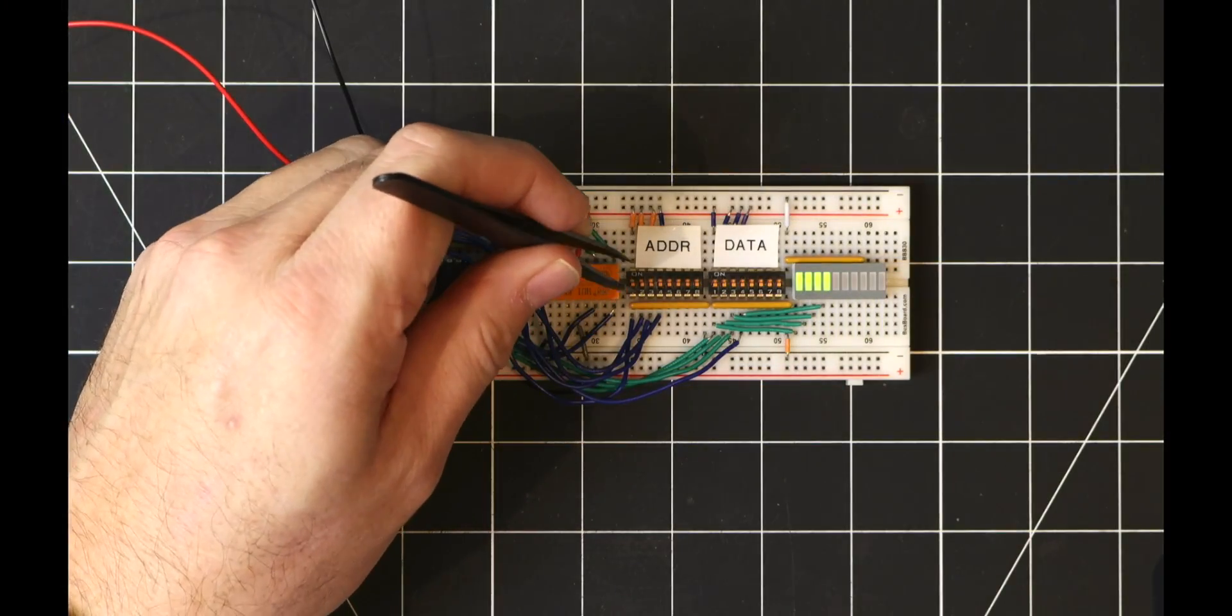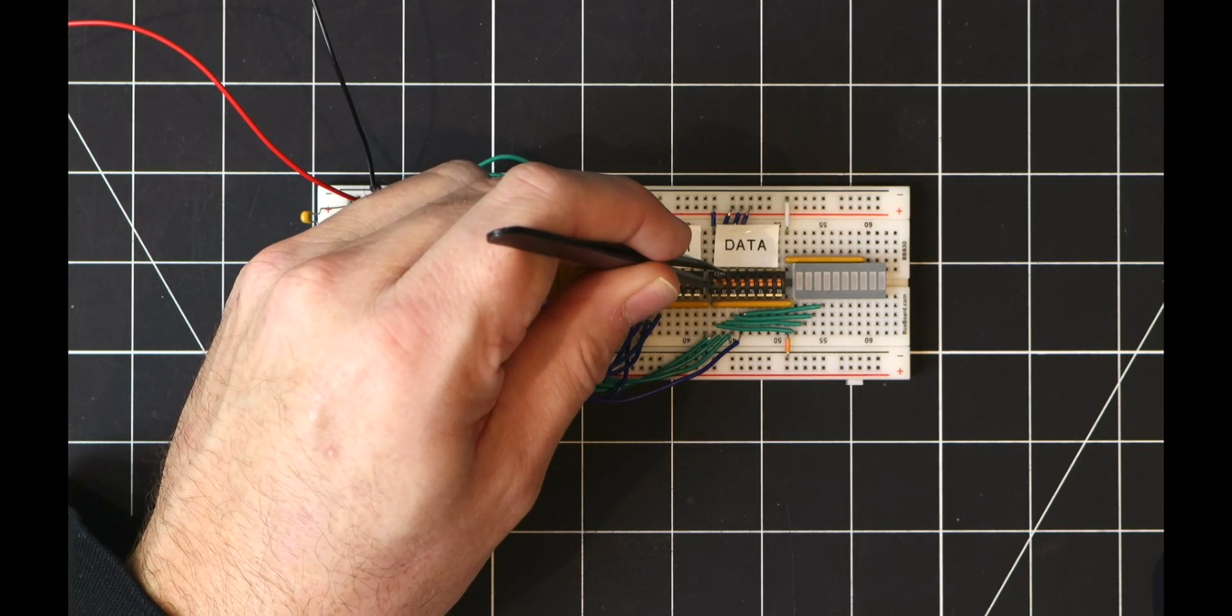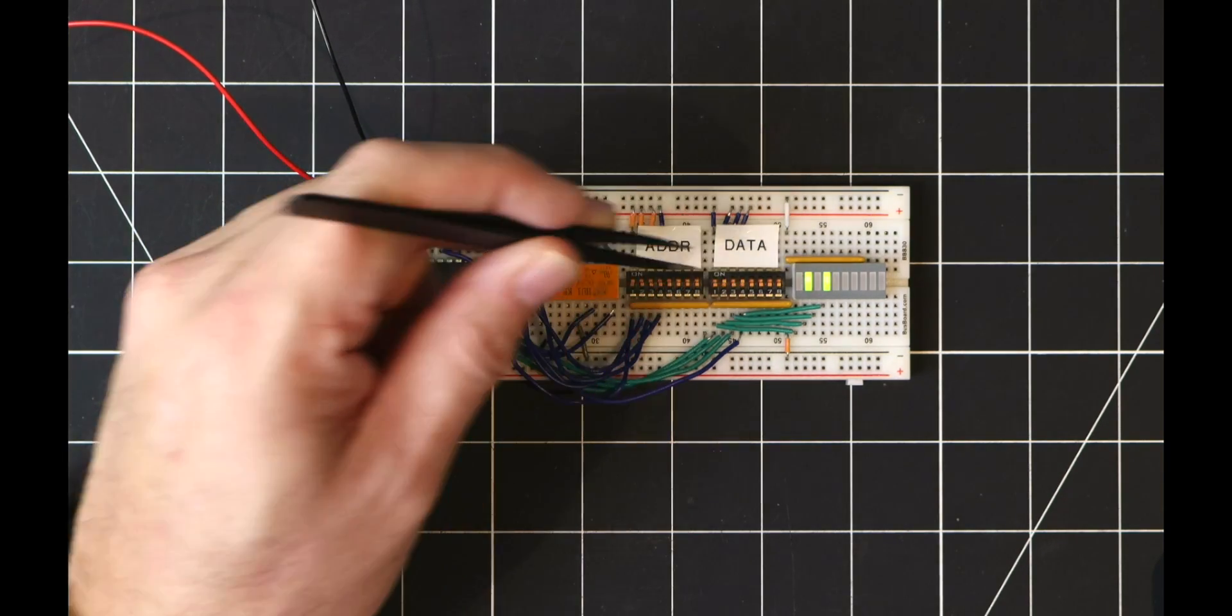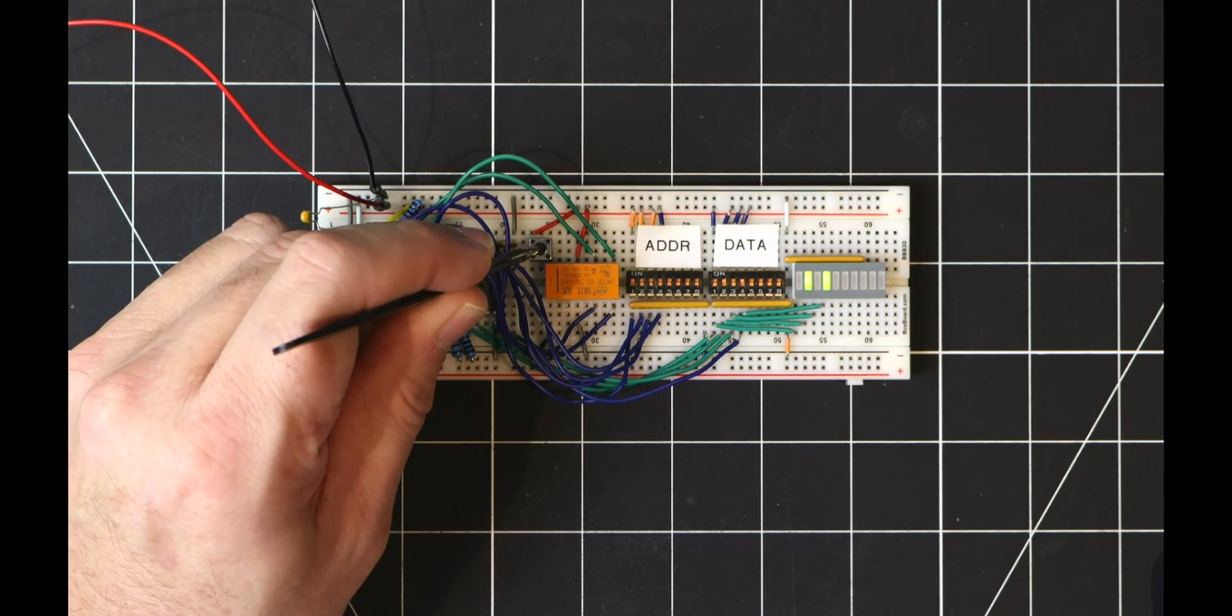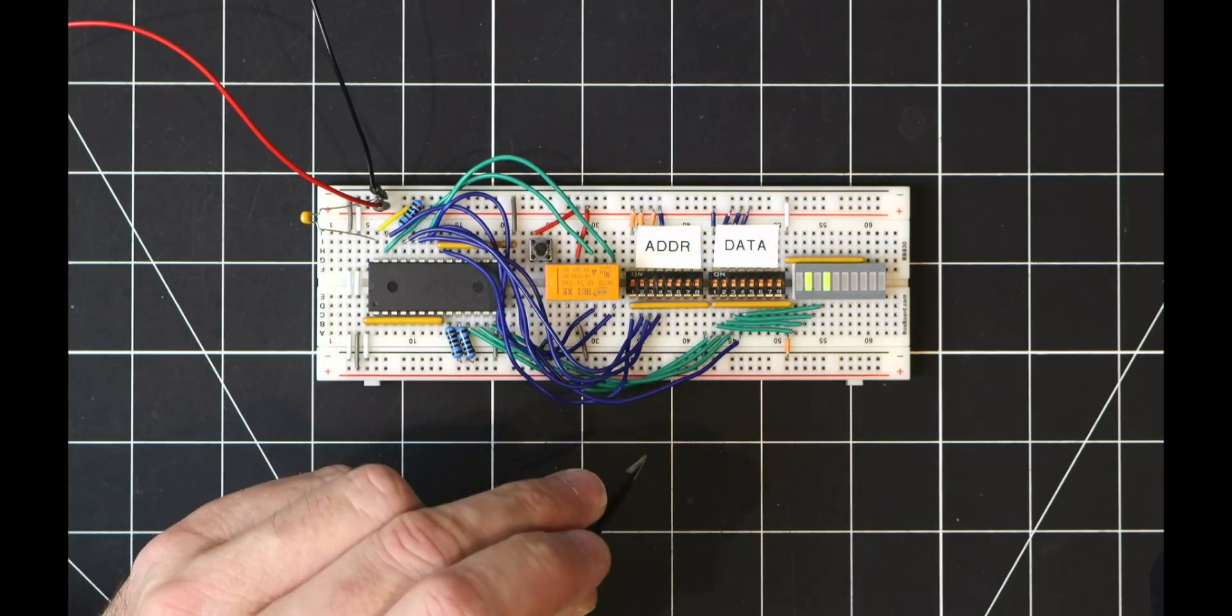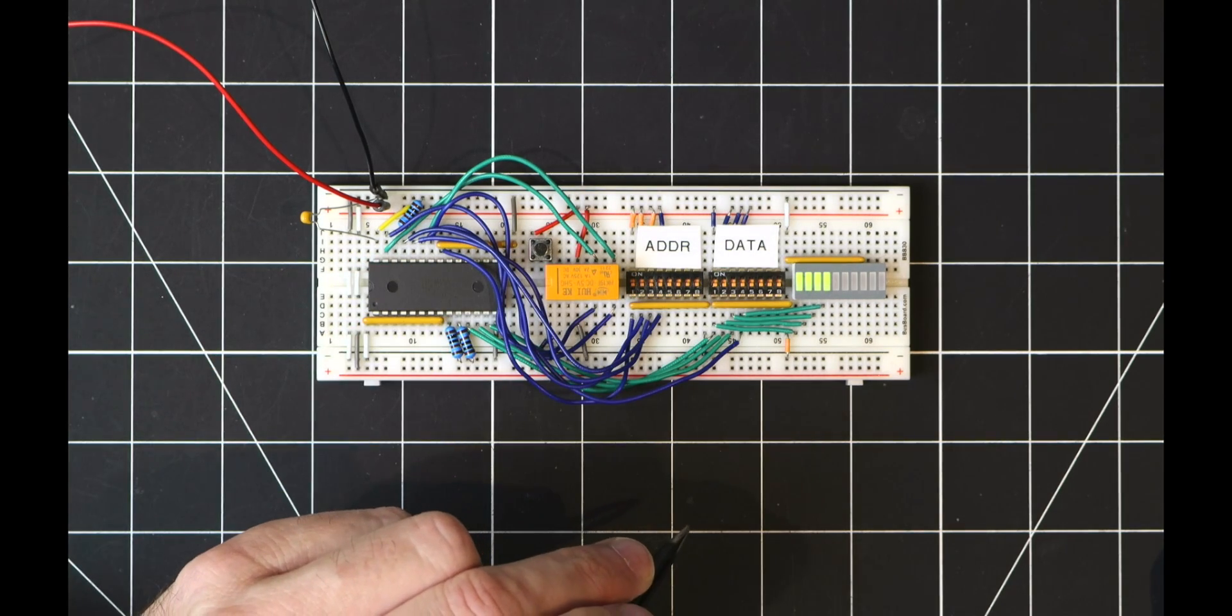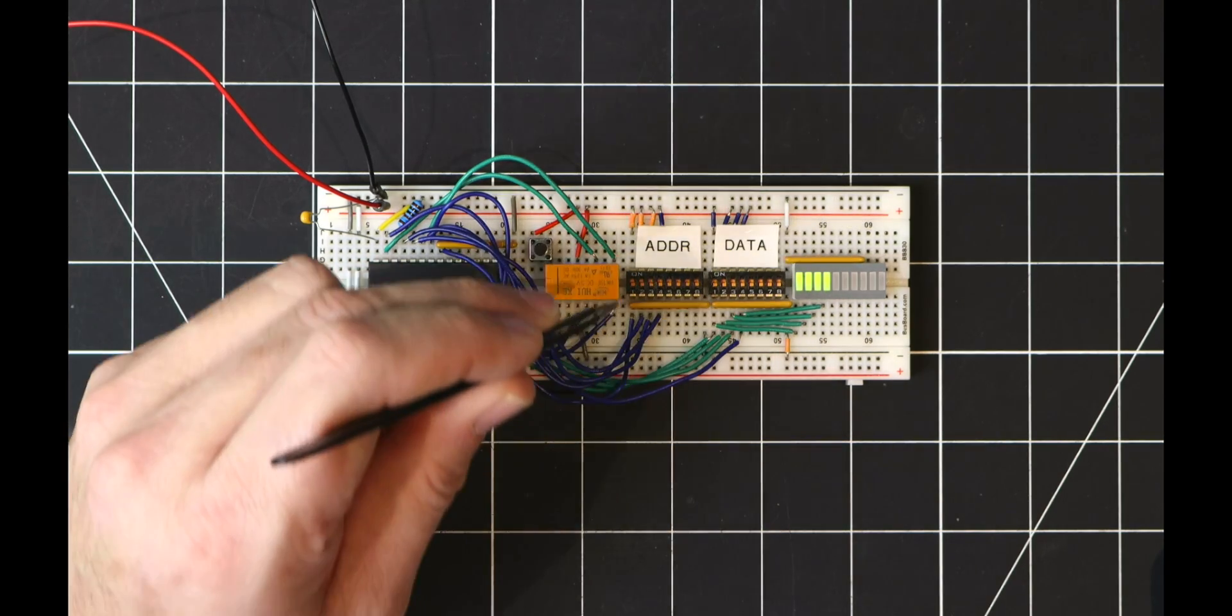We can now select another memory address and do the same thing. But let's select a different data value so that we can see the difference. There's now a different value written to address 1000, and when we toggle between this and address zero we read the correct values we wrote to each of these addresses.